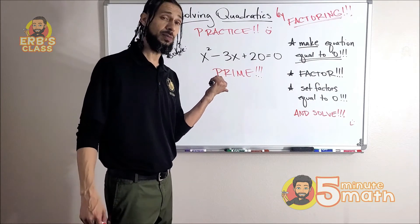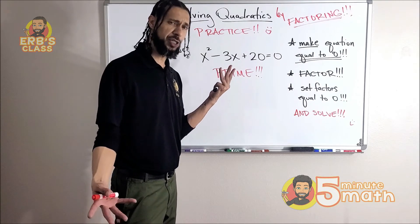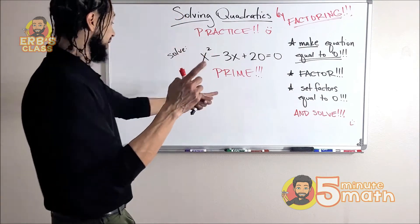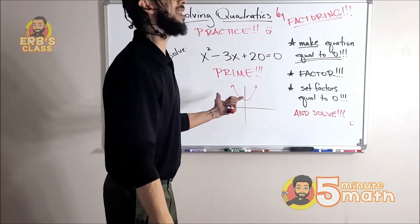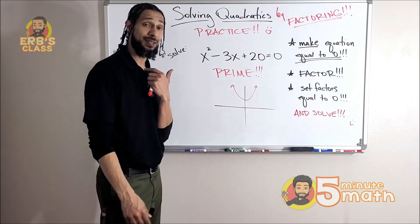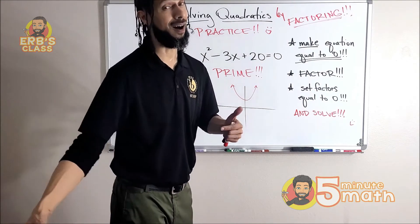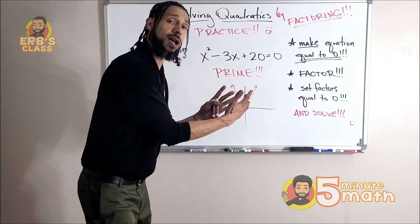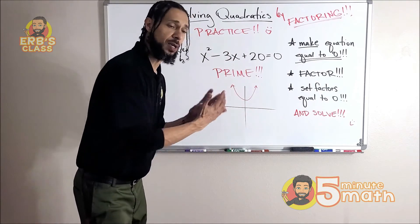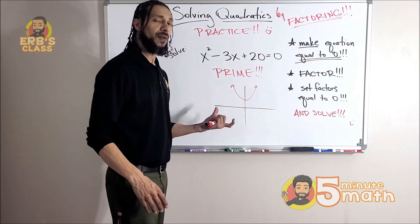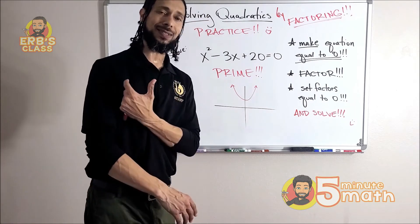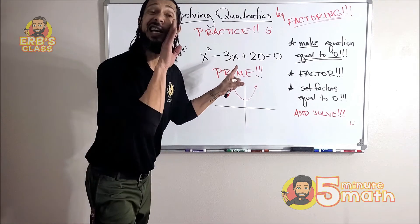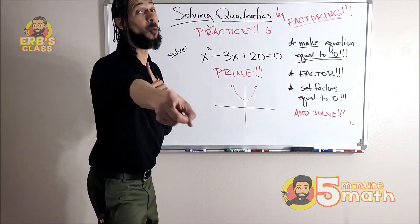So does that mean there are no solutions? Well, I don't know, but I know what it does mean. Yeah, it means if I graph that, it's not going to cross the x-axis. Yeah. So this can happen when it's factor time and you can't factor and it's prime. That just means this: that our parabola doesn't cross the x-axis. Yeah, but if we're still after solutions, there's a new way. Next video.